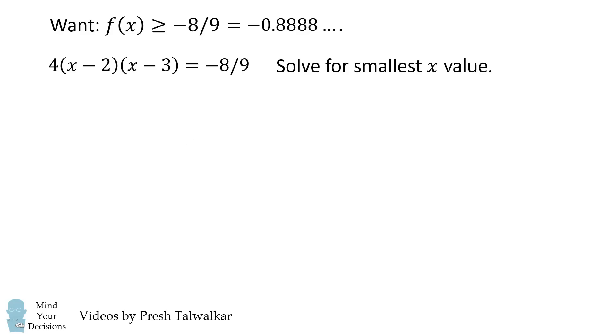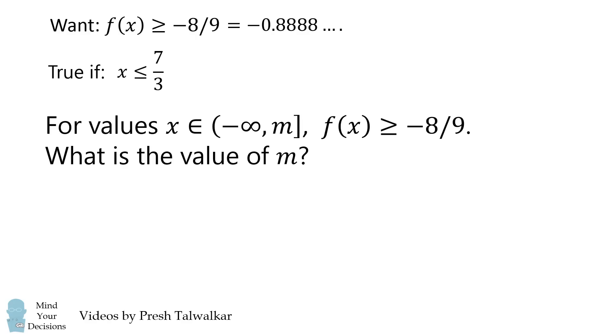We want the smallest x value so we just take x is equal to 7 over 3. But if you didn't see that trick, you can go ahead and solve it like you would solve a standard quadratic equation. We go ahead and factor, we end up with two results and we want the smallest x value. So now, f of x will be greater than or equal to negative 8 over 9 if x is less than or equal to 7 over 3. So going back to the question, we want to know what is the value of m and in our answer choices, it's going to be answer choice b, 7 over 3.